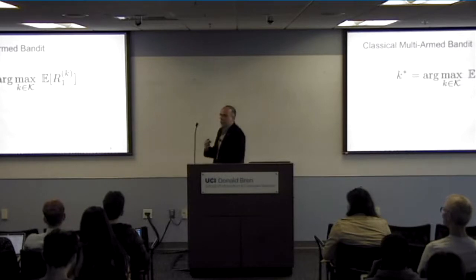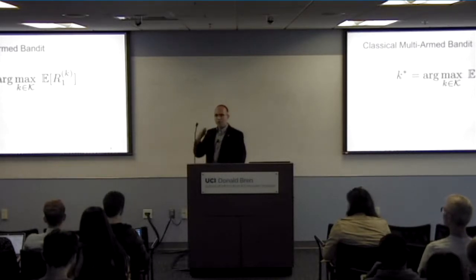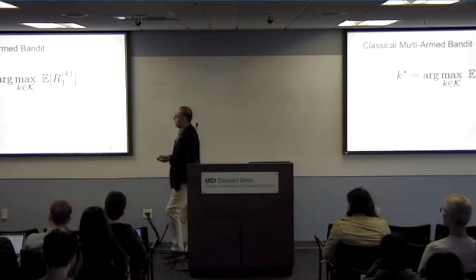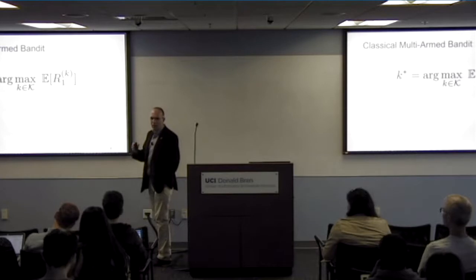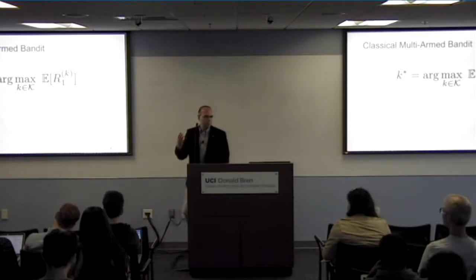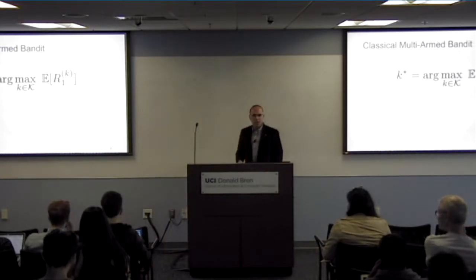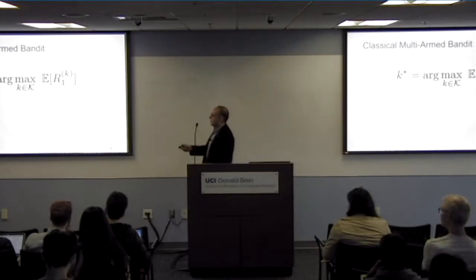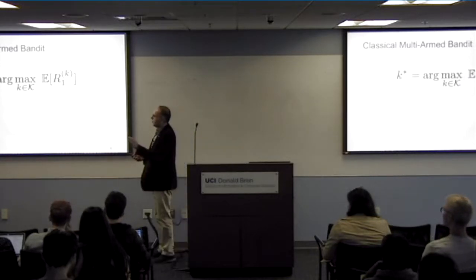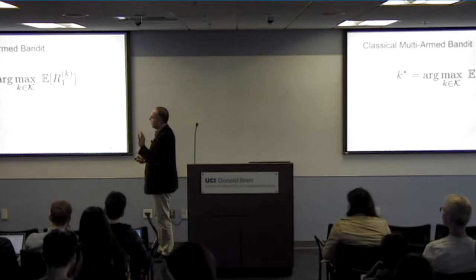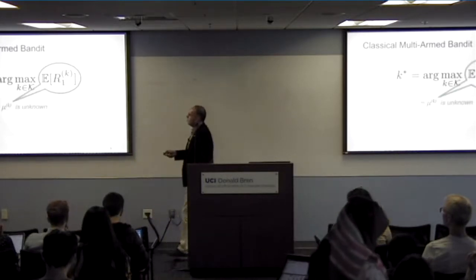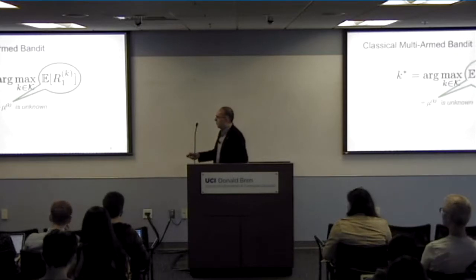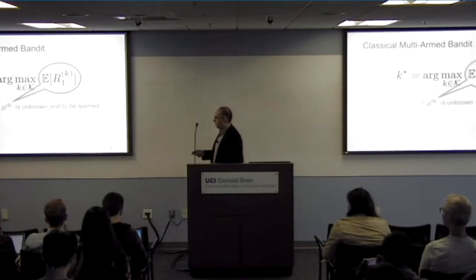If we knew these random variable distributions, it's good to know what the ideal we're seeking is. The best choice is very clear: we should always pull the arm which gives the highest expected reward. That arm — let's call it K-star — is the arm of interest. We want to design a policy that gets to that arm more often. This mu is used for the expected value, and the K arm is unknown and to be learned.